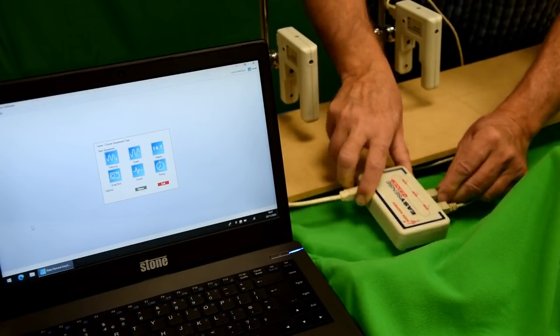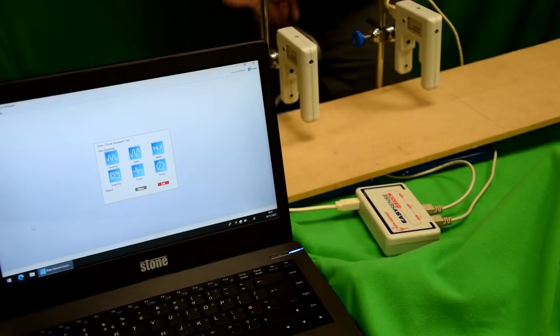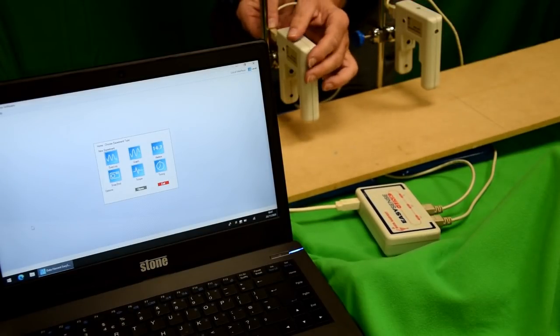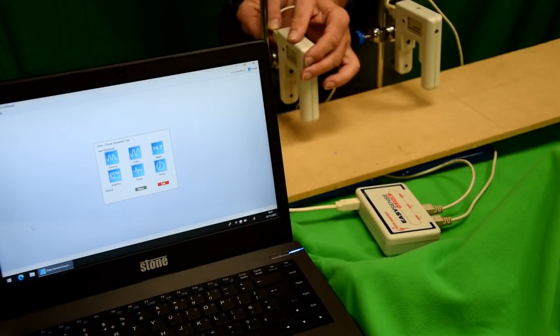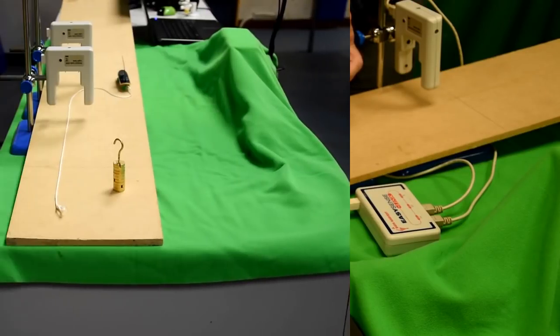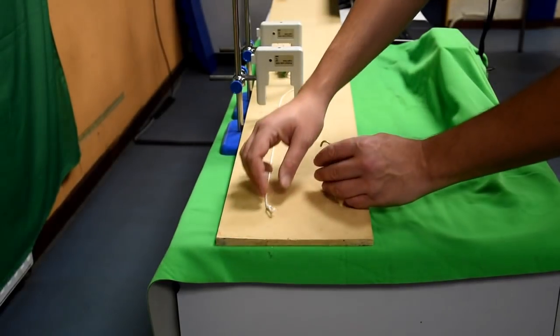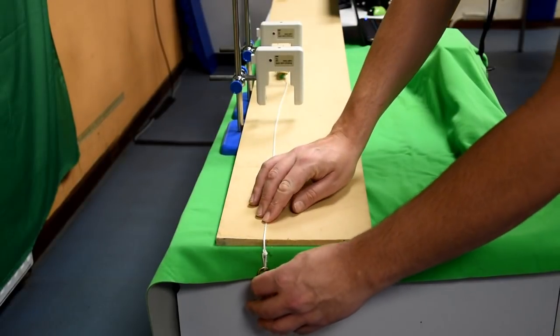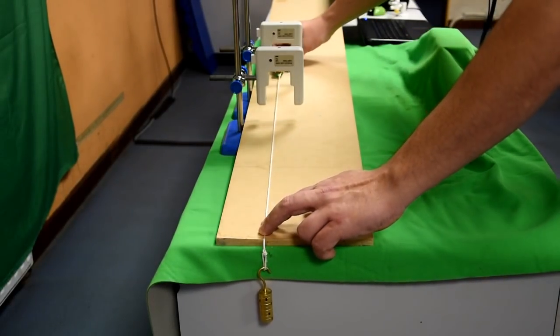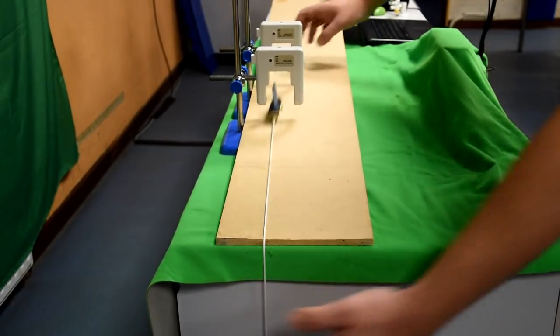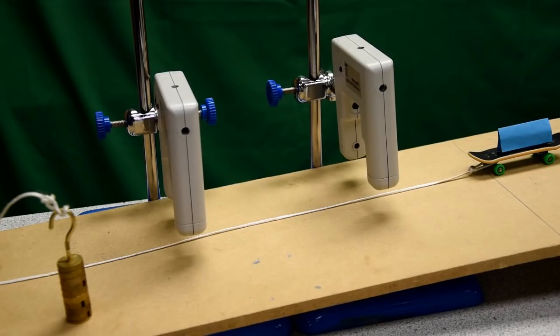At this point, you're ready to set up the software. This time, selecting acceleration rather than velocity. So, looking at this experiment at first from the end, you'll get one perspective. And then looking from the side, you'll see the other.